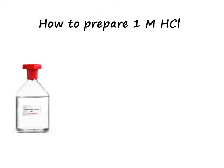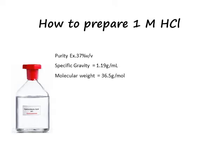The commercially available hydrochloric acid comes with a label. Check the label for purity, specific gravity, and molecular weight. The molarity of concentrated hydrochloric acid can be calculated with the equation: purity multiplied by 10 multiplied by specific gravity, divided by molecular weight. In this case, it is 12 mol per litre.